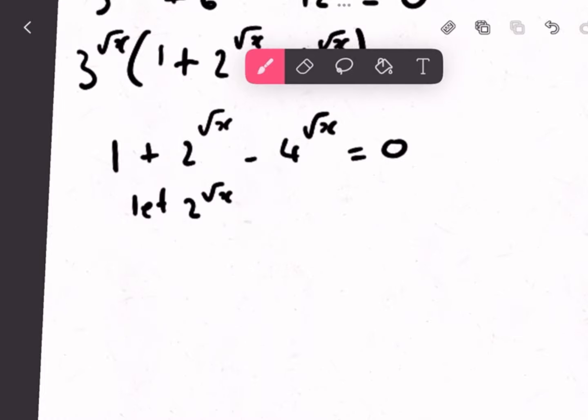Now, we'll say let 2 to the power of root x is equal to t. And this is just an imaginary value. Now, we'll replace t into the equation.